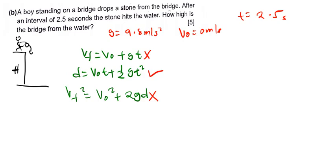So in that case d is basically the same as the H. So I am going to say H being equal to V initial times T plus half g T squared. But we do know that the initial speed is 0. So if the initial speed is 0 times anything, 0 times 2.5 is basically 0. So this will be cancelled out.